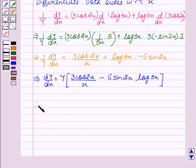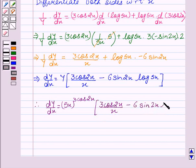Therefore, dy/dx equals, now we will substitute the value of y, which is 5x to the power 3cos2x, times [3cos2x over x minus 6sin2x log 5x].